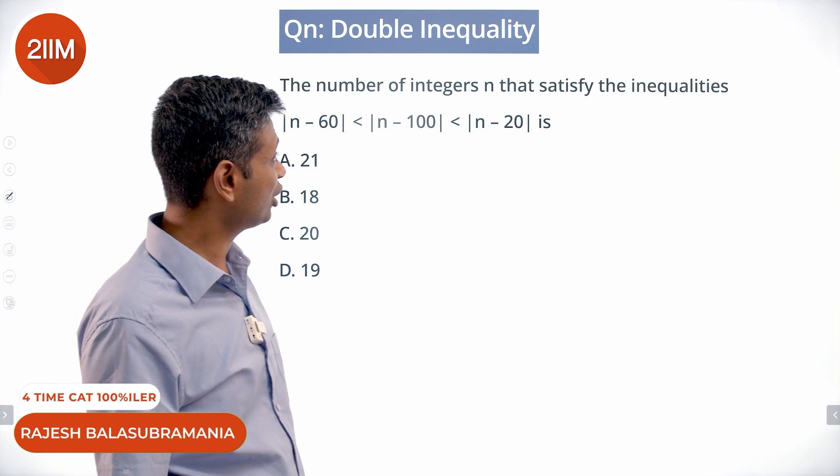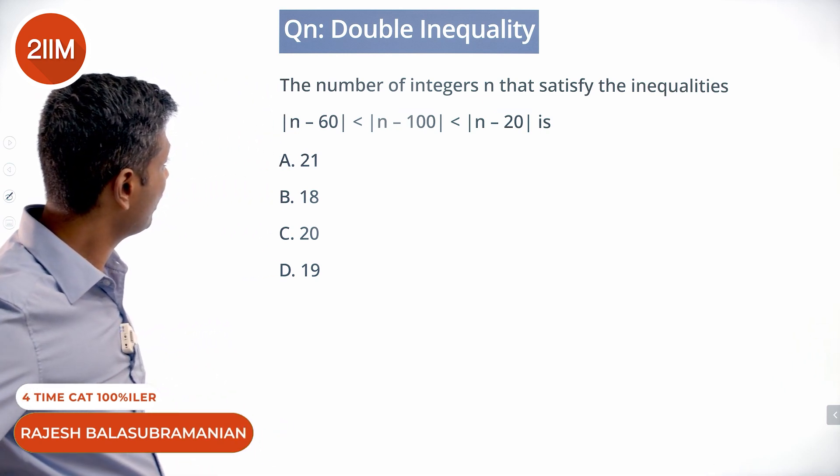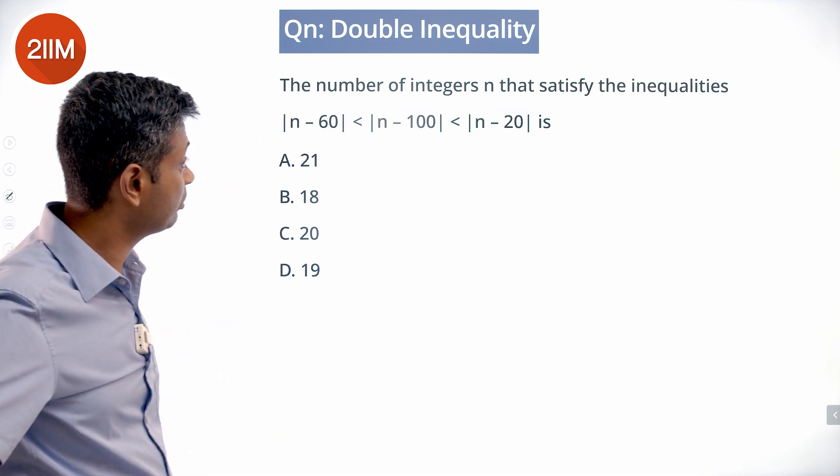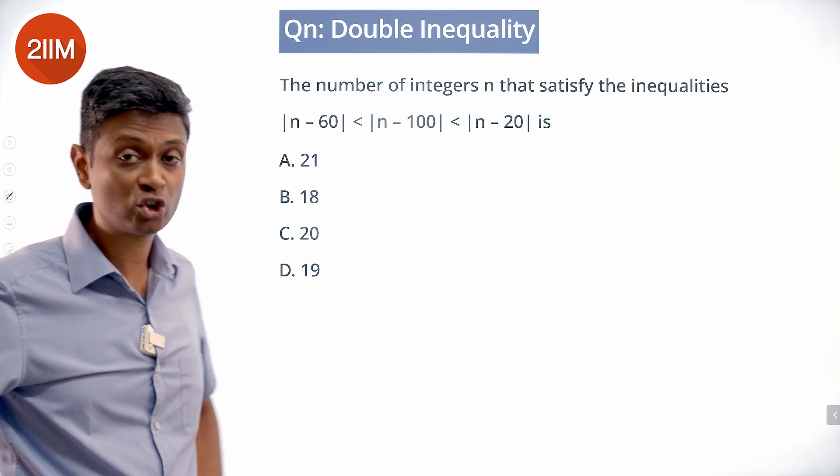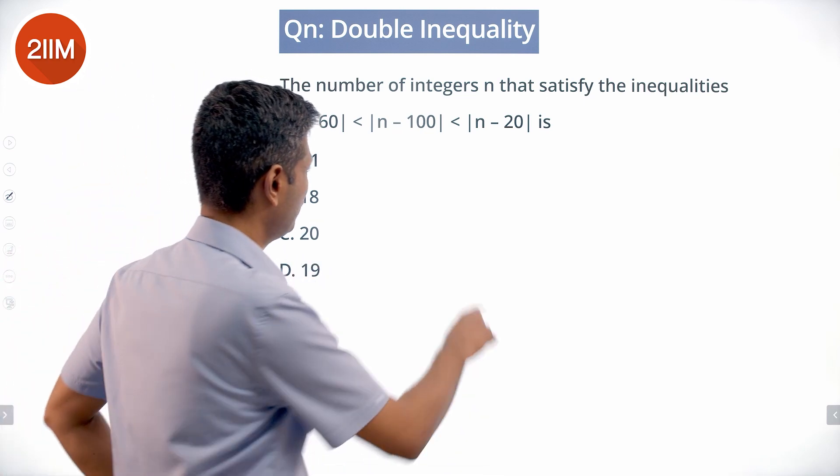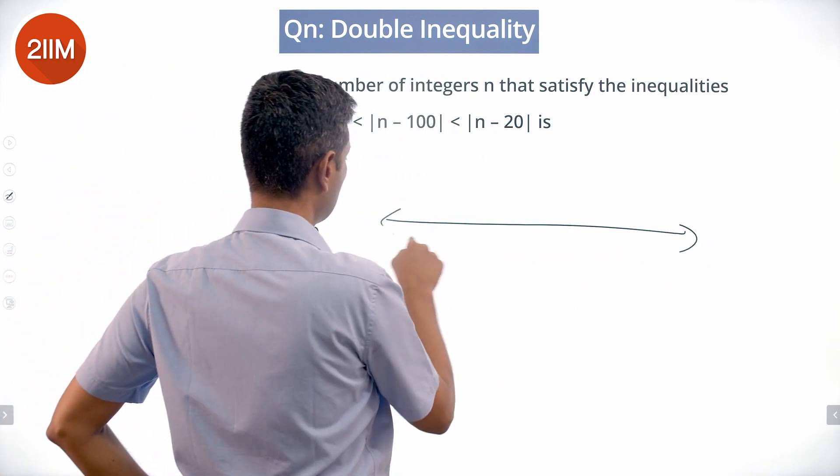The number of integers n that satisfy the inequalities |n - 60| < |n - 100| < |n - 20| is very interesting. First thing we need to know is if you have two points on the number line x and y, the distance between these two points is |x - y| or |y - x|.